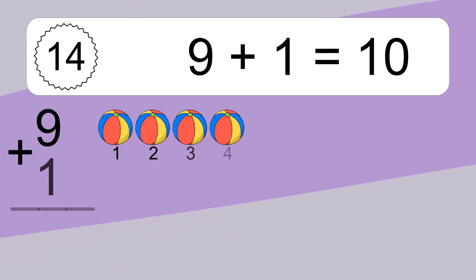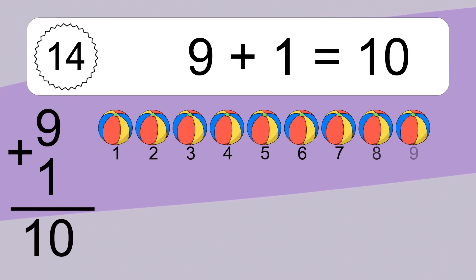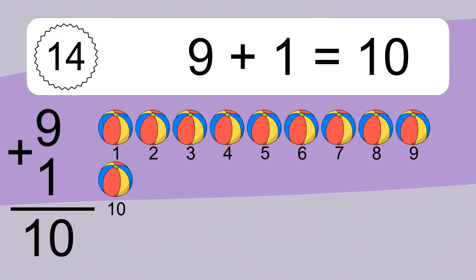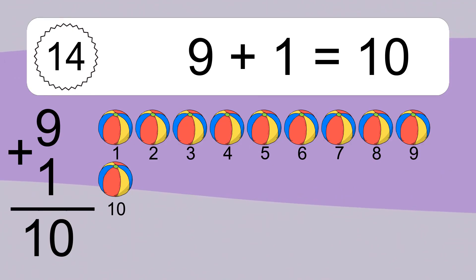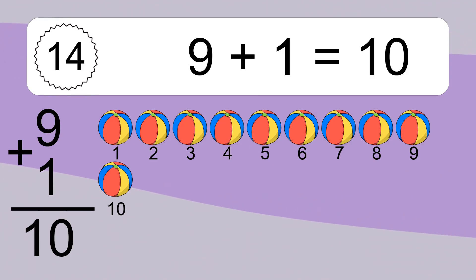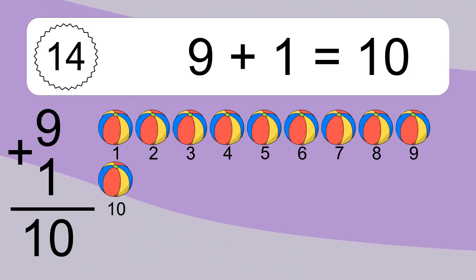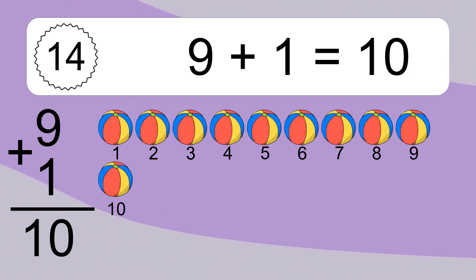9 plus 1 equals what? 9 plus 1 equals 10. Let's count it: 1, 2, 3, 4, 5, 6, 7, 8, 9, 10.